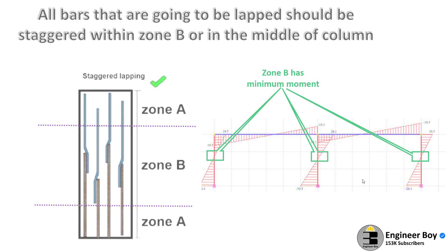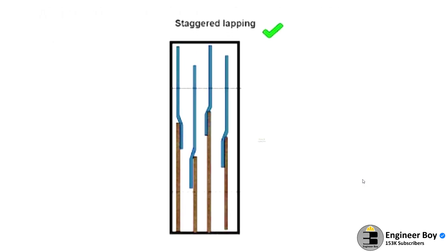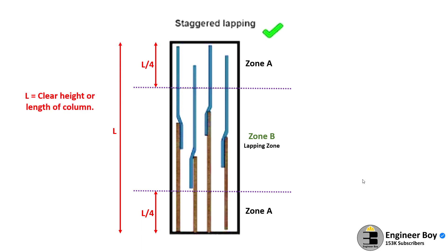In practical applications, it can be complicated to predict zone B. You can split the column into three zones: zone A, zone B, and again zone A. Determine zone A by using L/4, where L is the clear length or height of the column.